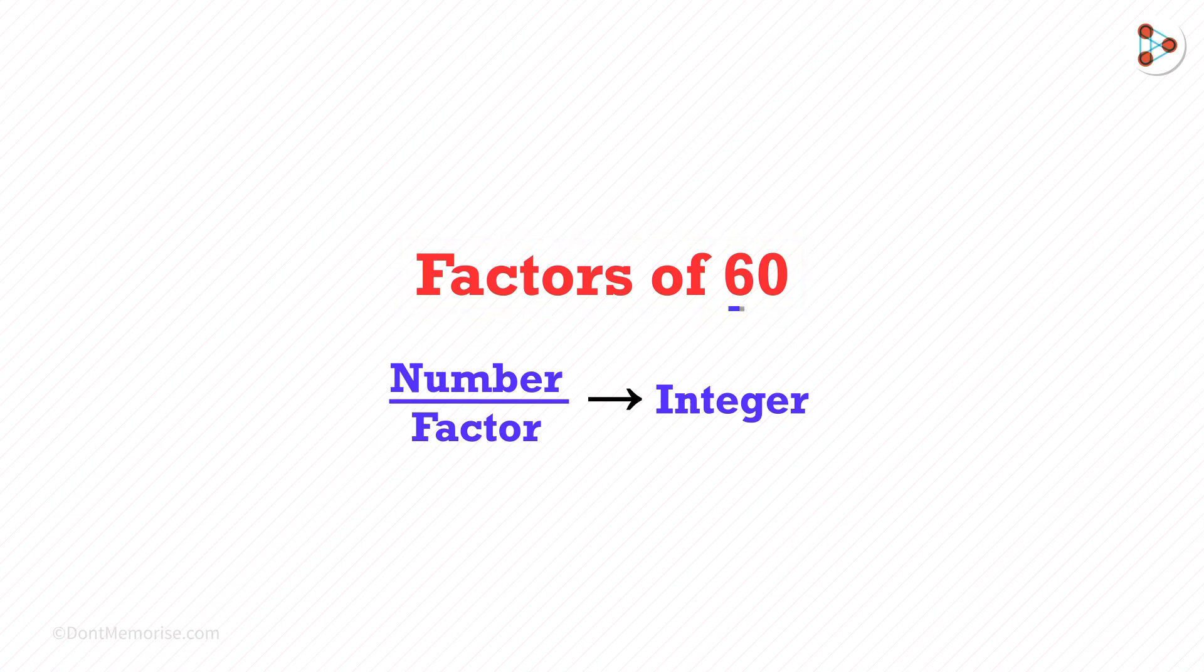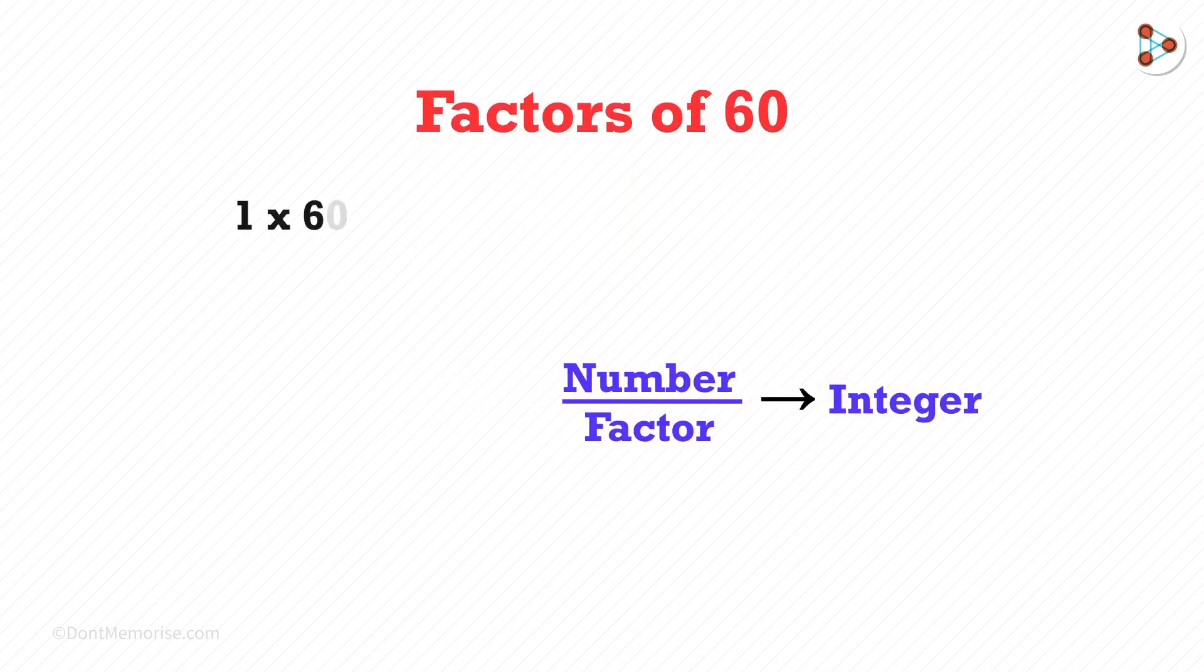For that we'll have to look at the number 60 and all possible products of two numbers. How many different ways can exist here? Yes, we can write it as 1 times 60, 2 times 30, 3 times 20, and there are three more products like this.